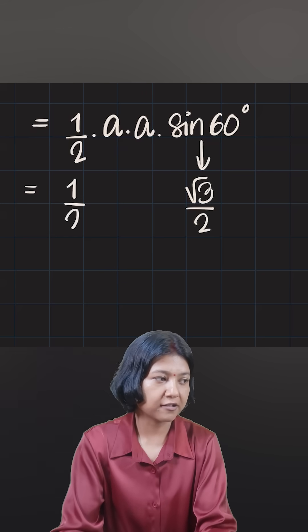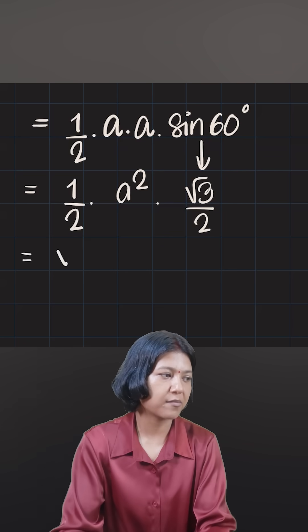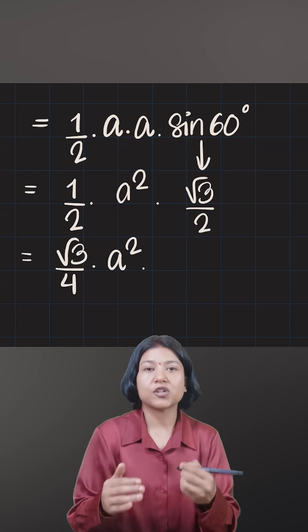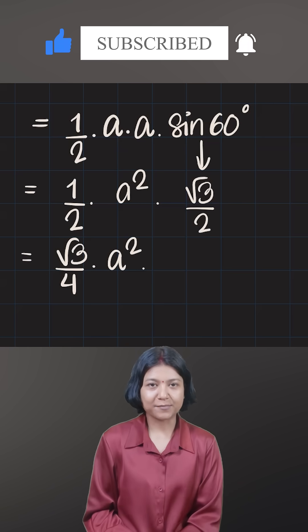Thereby you have two values numerical, while a times a is just a squared. If you simplify this, this is when you get the formula root 3 by 4 times the square of the side. So that's it. Just take the square of the side, times it with root 3 upon 4.